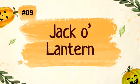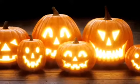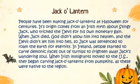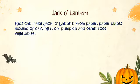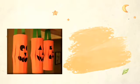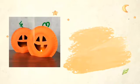Idea nine is Jack-O-Lantern. People have been making Jack-O-Lanterns at Halloween for centuries. Its origin comes from an Irish myth about Stingy Jack, who tricked the devil for his own monetary gain. When Jack died, God didn't allow him into heaven and the devil didn't let him into hell, so Jack was sentenced to roam the earth for eternity. In Ireland, people started to carve demonic faces out of turnips to frighten away Jack's wandering soul. When Irish immigrants moved to the United States, they began carving Jack-O-Lanterns from pumpkins as these were native to the region. Kids can make Jack-O-Lanterns from paper or paper plates instead of carving real pumpkins, and small kids can draw and color paper lanterns and feel the same joy of this festivity.